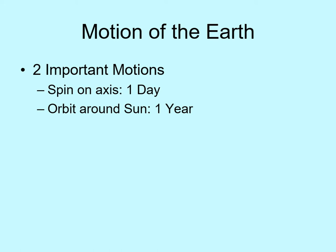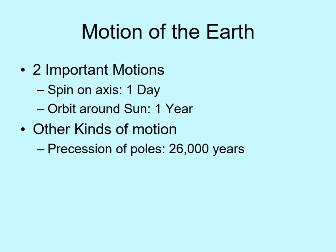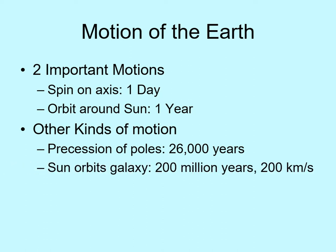We'll look at these two in a lot more detail, but I should mention that these are not the only ways the Earth is moving. Our spin axis — effectively the line between the north and south poles — changes very slowly over a 26,000-year period. We call this the precession of the poles, and it changes what constellations are visible in any given season. Our whole solar system orbits the Milky Way galaxy at a speed of 200 kilometers per second, and the galaxy is so big that it takes us 200 million years just to go around once. This motion, along with the motion of the other stars, changes the shapes of constellations over millions of years.